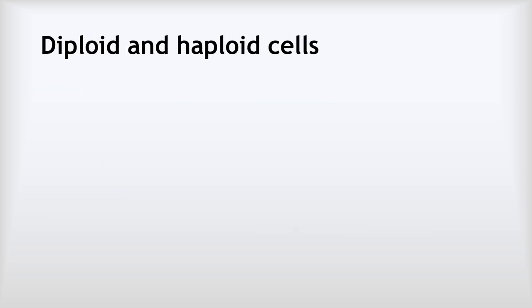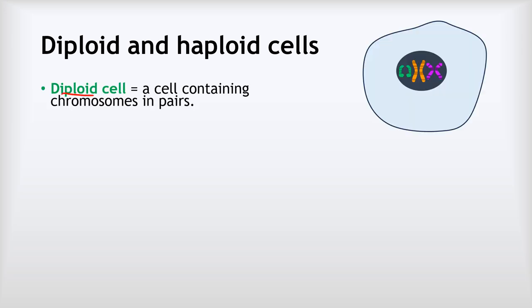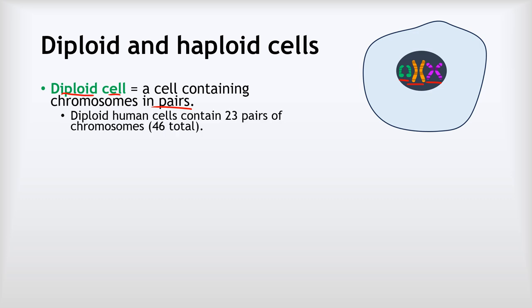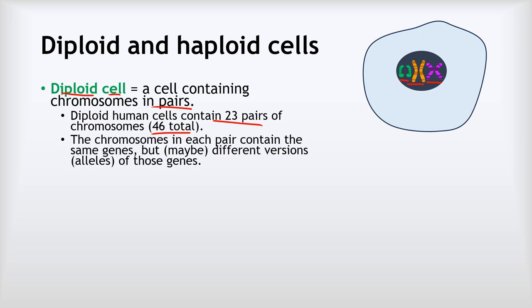A diploid cell is a cell containing chromosomes in pairs. We can see an example here: two green chromosomes are one pair, two orange chromosomes are a second pair, and two purple chromosomes are a third pair. In humans, our diploid cells contain 23 pairs of chromosomes — 46 chromosomes in total. The chromosomes in each pair contain the same genes but maybe different versions of those genes, which we call alleles.